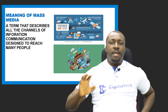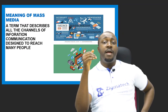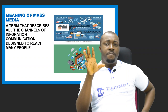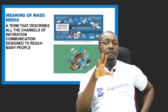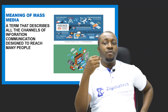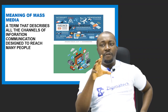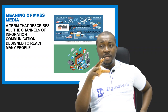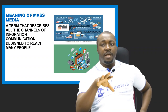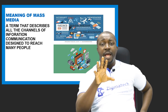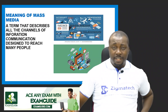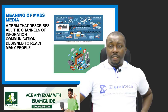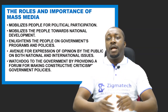Now let's look at mass media. We mentioned mass media as one of the agents in the formation of public opinion. Mass media is a term that describes all channels of information and communication designed to reach many people at the same time — radio, newspaper, television, the internet, and social media. Any way you can reach the generality of the public at the same time is what we refer to as mass media. It plays a very crucial role in our polity.